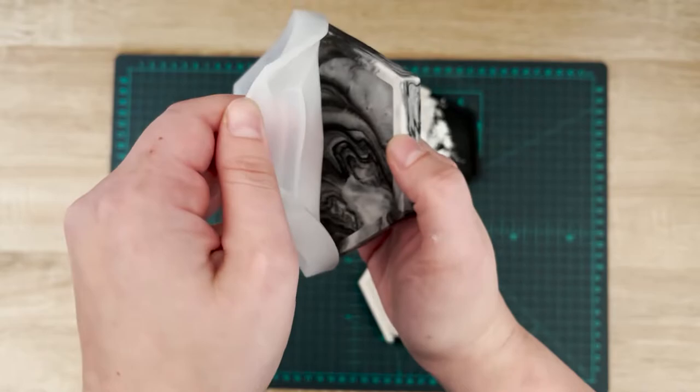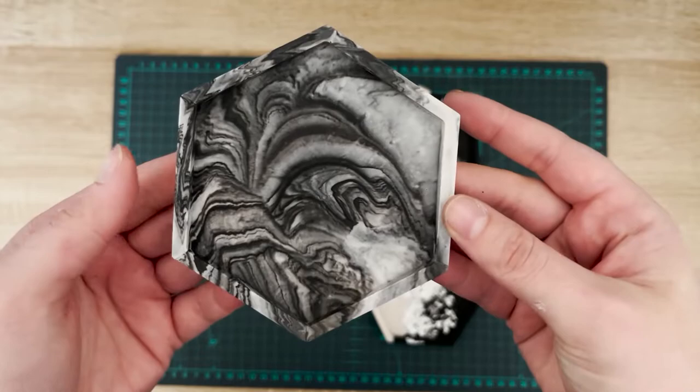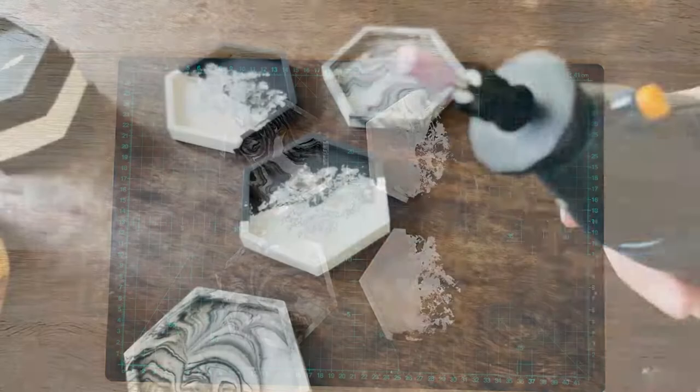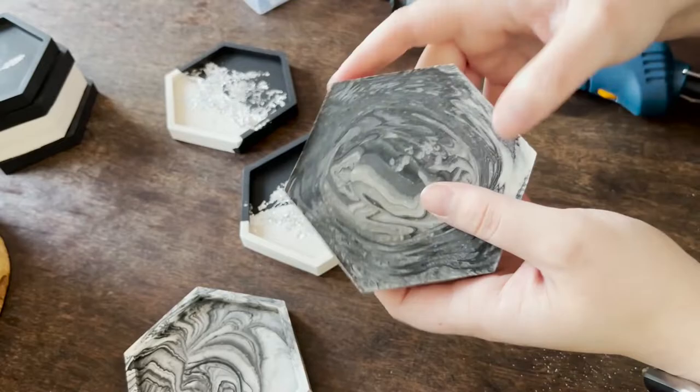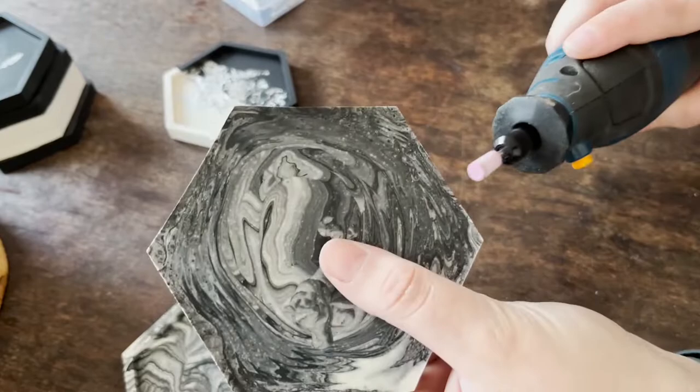Now I'm gonna go and sand them. I'm not gonna sand the whole coaster, I just want to sand the edges so that it's not super sharp. I have my power tool here and I initially put on one of the stone bits. I went to try and sand the edges and that didn't really work.